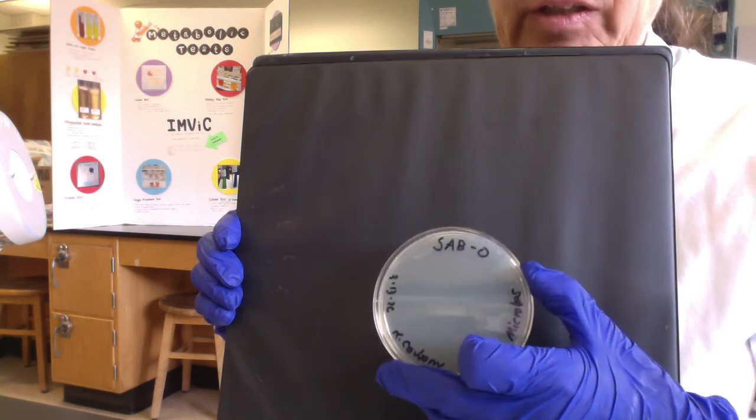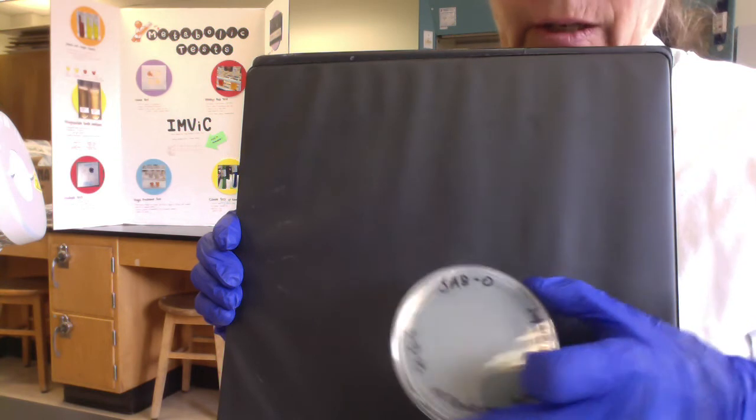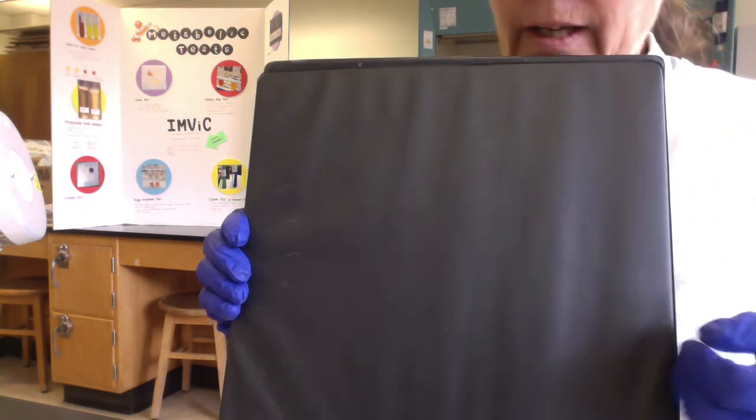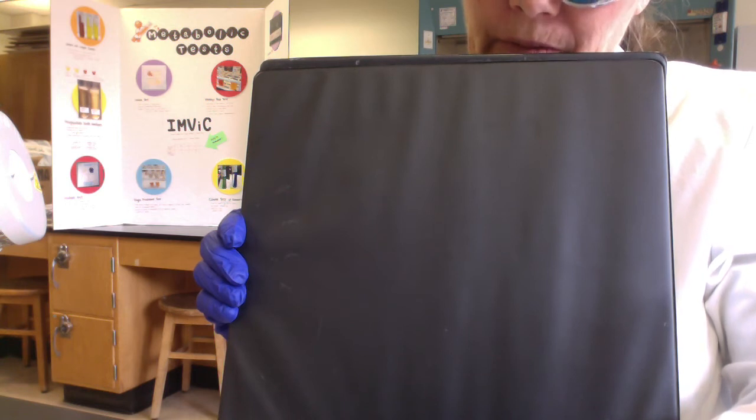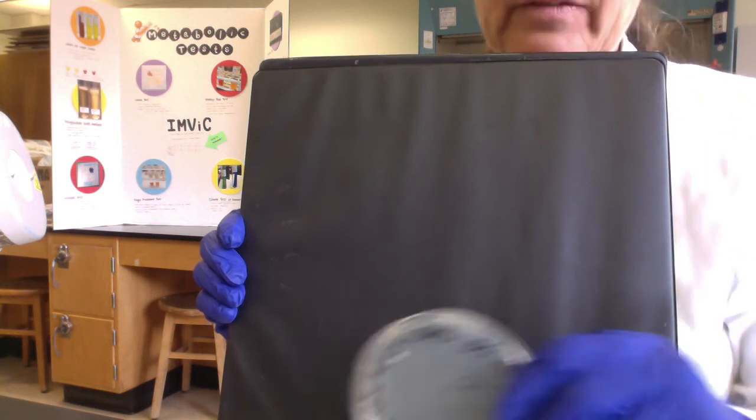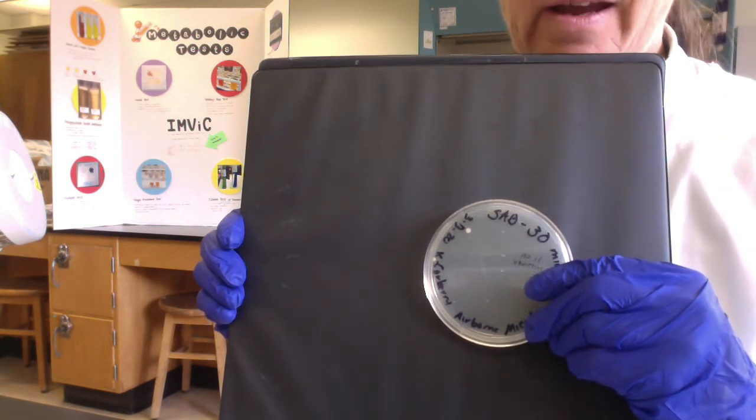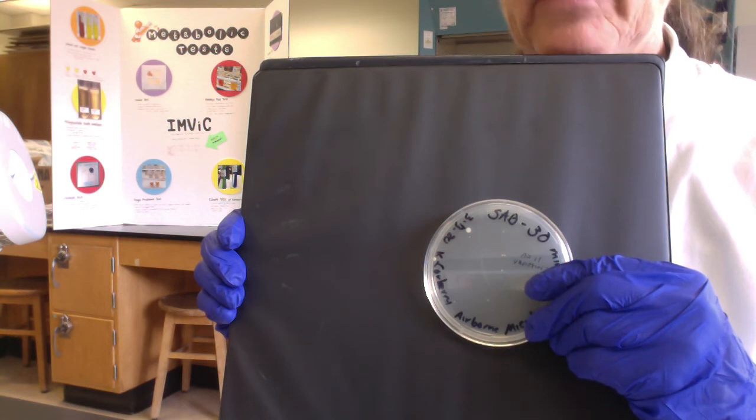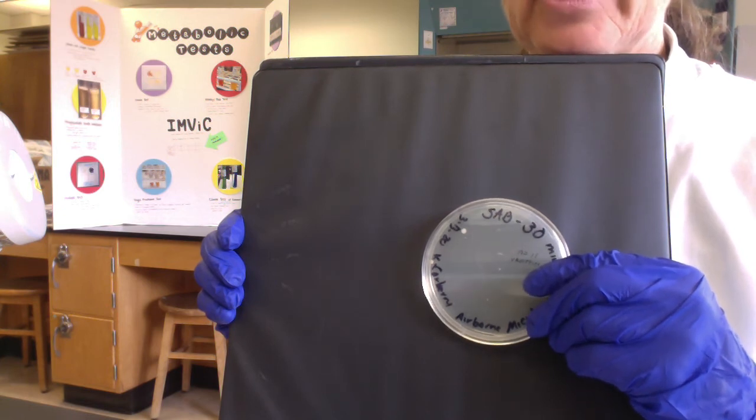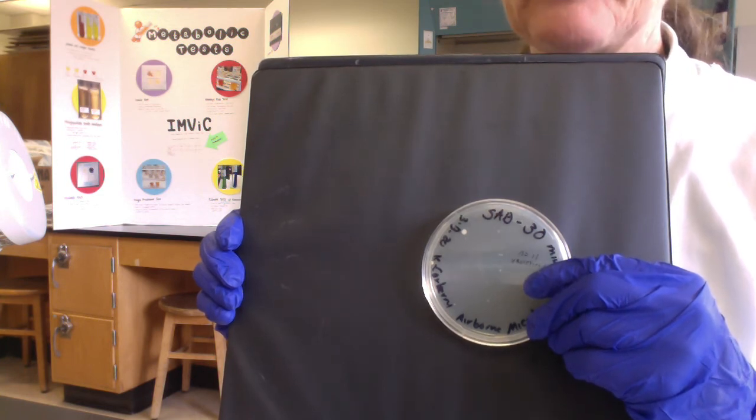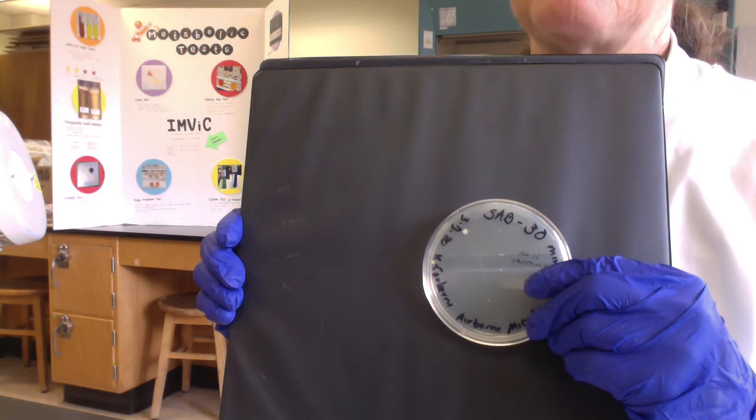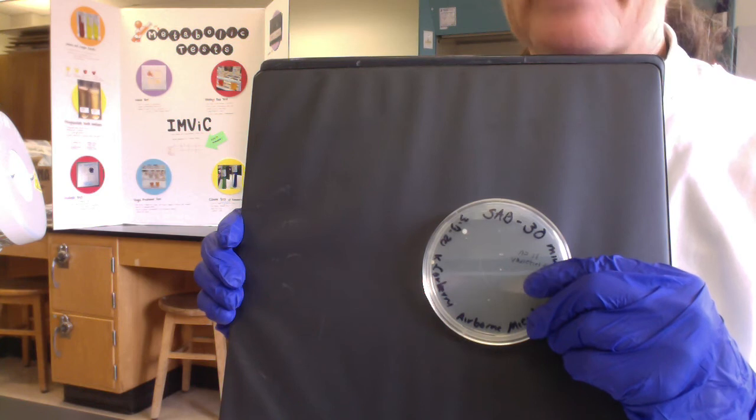So again, the SAB zero-minute exposure, no colony growth. So that tells us the plates were sterile, and that's awesome. And then on the SAB 30-minute plates, I have 11 colonies, and that is consistent. We had like 36 colonies on the TSA 30 plates. On the SAB, we only have 11. So we would presume that on the SAB plate we only have fungi, such as yeasts and molds growing. We shouldn't have bacteria or very few bacteria. So that would suggest that on our TSA plate, about 25 of the colonies probably were bacterial.